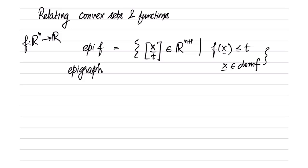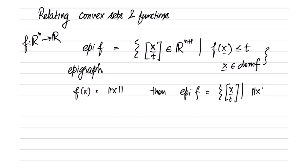You might recall the norm cone. With this definition, you can see that if f(x) = norm of x, then the epigraph of f is the norm cone. Similarly, we are defining the epigraph of any arbitrary function.